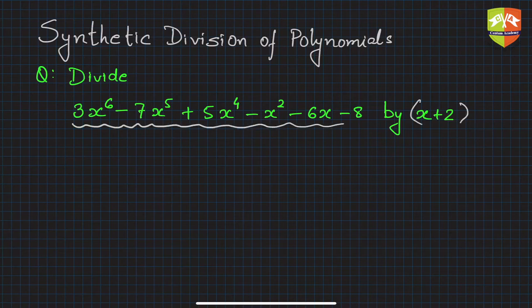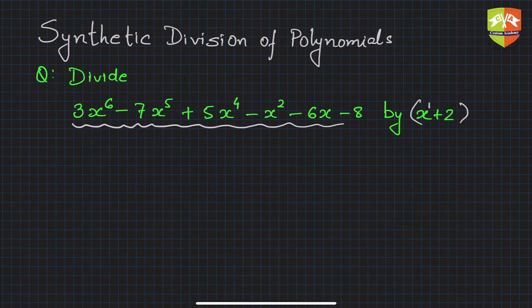Please remember this particular division method works only when the divisor is linear. You can see this is linear because the power is 1, so this is a linear divisor. The dividend could be anything, and we will now learn how to quickly do it.